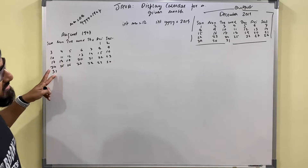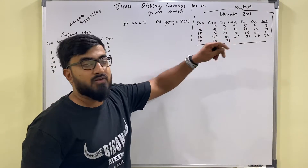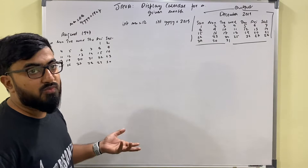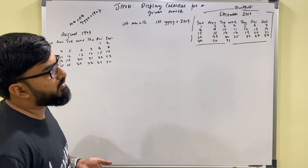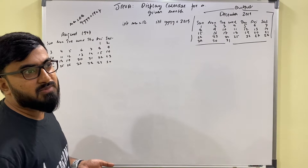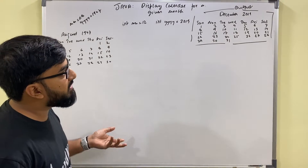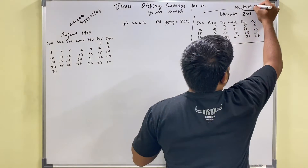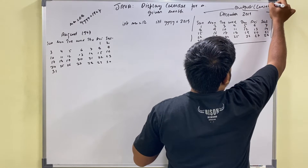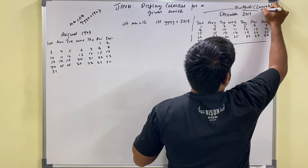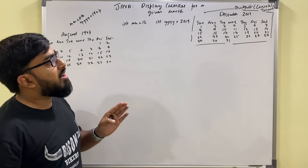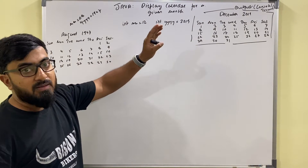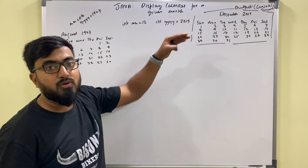August has 31 days and December also has 31 days. This problem was brought to me by a student about two to four years back — it's a very interesting problem. When you print output to standard output (console/terminal), the printing happens from left to right and top to bottom: you print the first line, then the second line, then the third line, and so on.